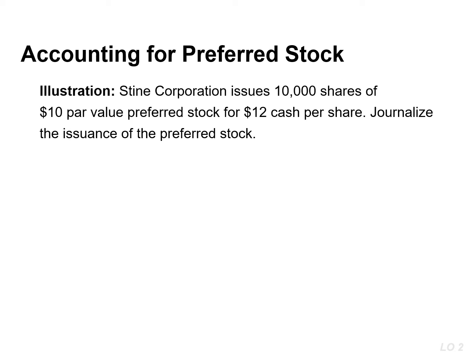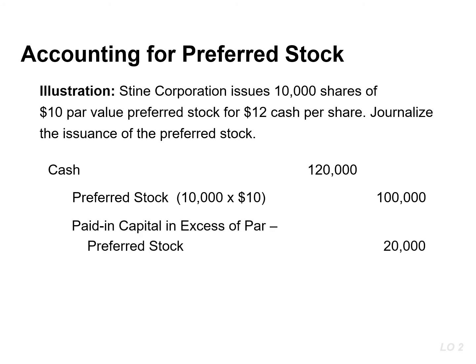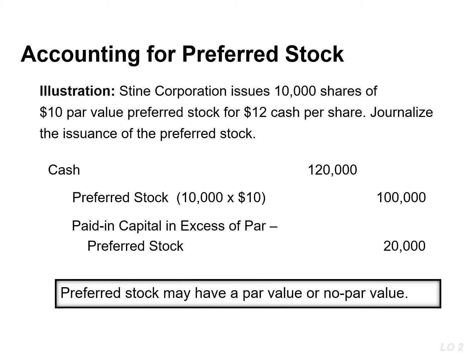Preferred stock has contractual provisions that give it preference or priority over common stock in certain areas. Preferred stockholders have priority to dividends and assets in the event of liquidation, but typically do not have voting rights. If this company issues 10,000 shares of $10 par value preferred stock for $12, the entry to record the issuance would result in a debit to cash for $120,000, with a credit to preferred stock. In the stockholders' equity section of the balance sheet, companies show preferred stock first because of its dividend and liquidation preferences over common stock.